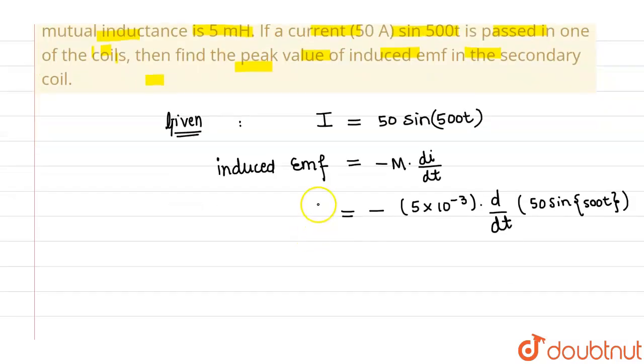This thing we need to find out. This is induced EMF E. So this will come out to be minus 5 into 10 raised to the power minus 3 into 50 into the differentiation of sin 500t is nothing but cos 500t into 500. So this will be into 500 into cos of 500t.